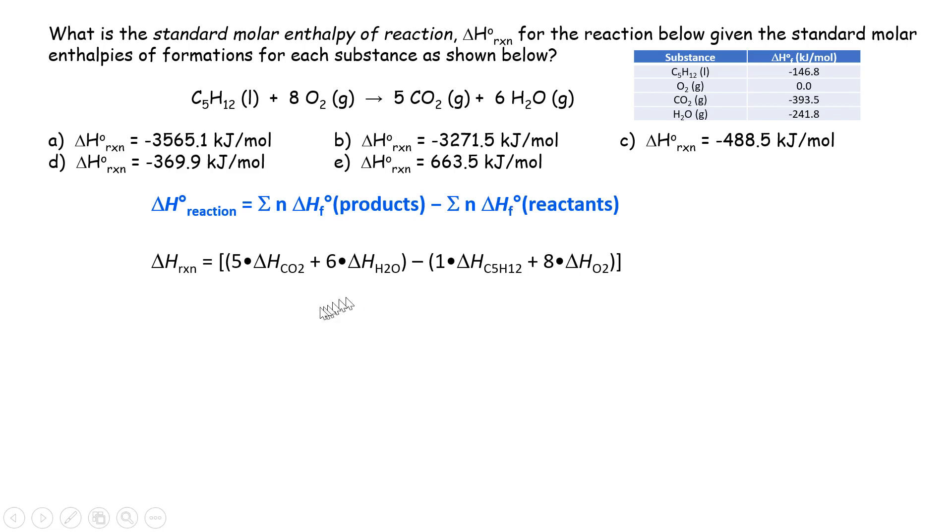Okay, the next step is just to replace those delta H with the actual values given in this table right here. So for CO2, five times negative 393.5, and then for water should be six times negative 241.8. So that's the product.